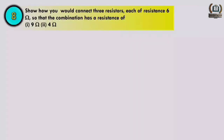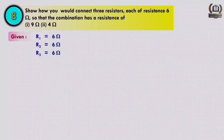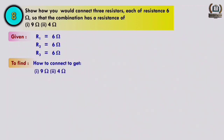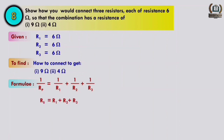Question number eight: how would you connect three resistors of resistance 6 ohm each so that the combination has a resistance of (a) 9 ohm and (b) 4 ohm? R1 = R2 = R3 = 6 ohm. The formula used is 1/Rp = 1/R1 + 1/R2 + 1/R3 and Rs = R1 + R2 + R3.